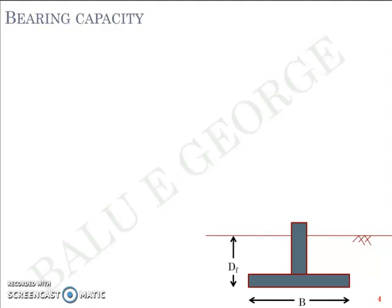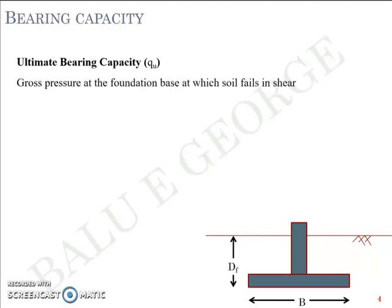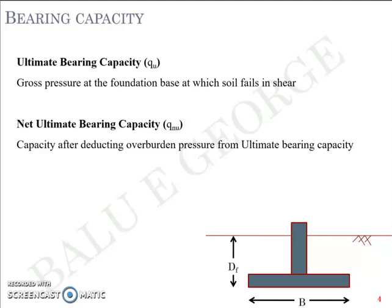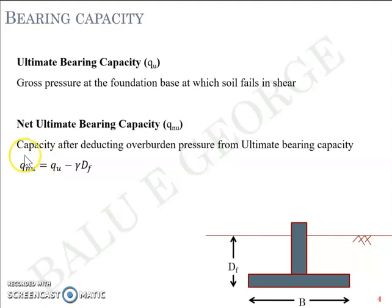Bearing capacity can be defined as ultimate bearing capacity, denoted q_u, which is the gross pressure at the foundation base at which the soil fails in shear. Another definition is net ultimate bearing capacity, represented as q_nu. Net ultimate bearing capacity is obtained by deducting the overburden pressure from the ultimate bearing capacity: q_nu = q_u − γ·Df. So q_u was the ultimate bearing capacity at the foundation level, and subtracting γ·Df — the weight offered by the soil above the foundation level — gives q_nu.